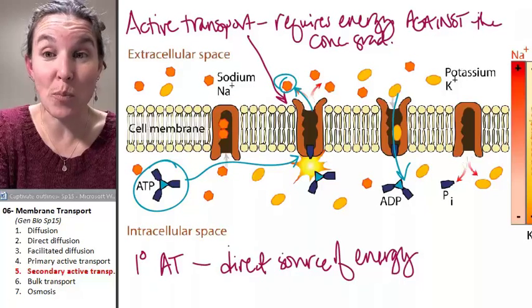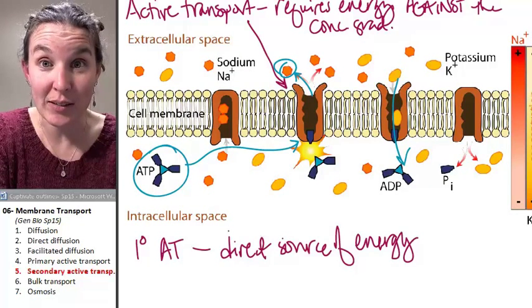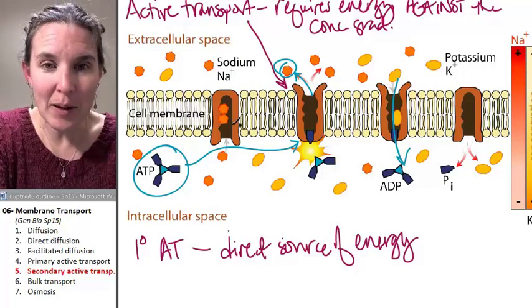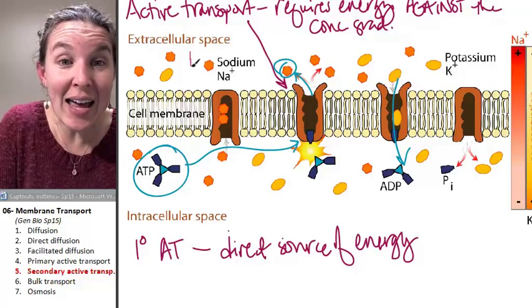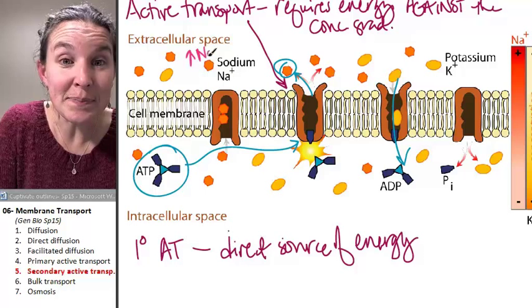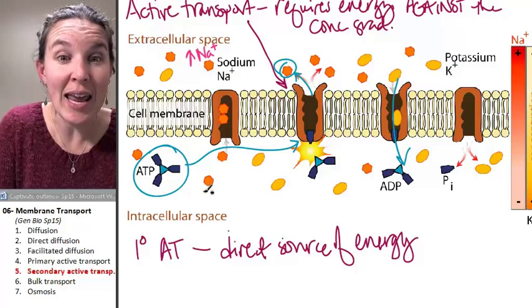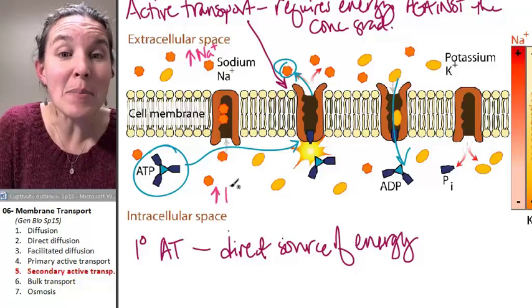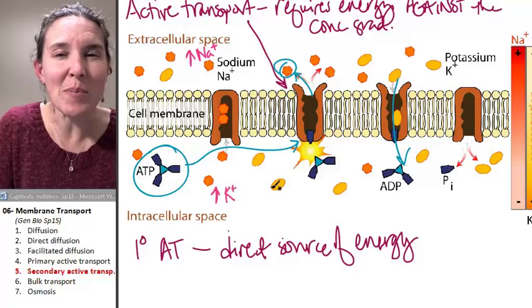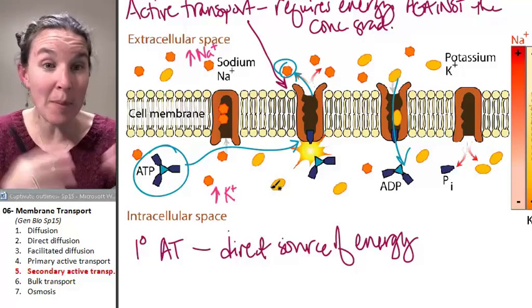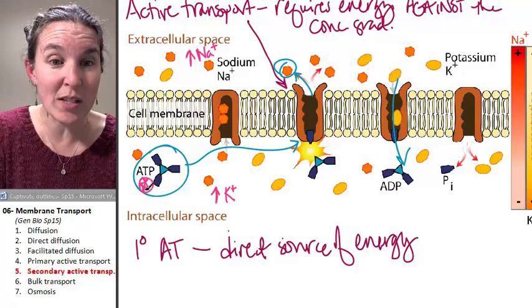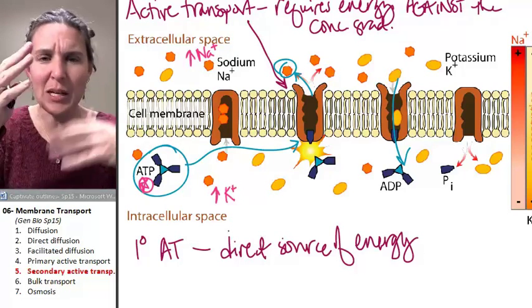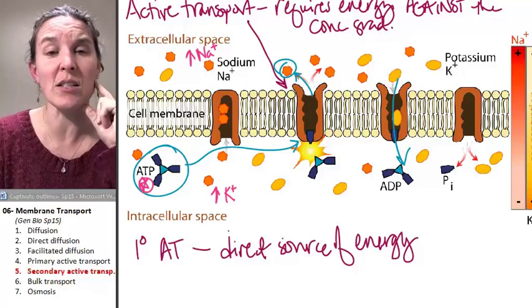Remember, this is primary active transport, and we have a little pump that is basically creating a high sodium environment outside and a high potassium environment inside. So this pump is using a direct source of ATP, and it's pumping and pumping, and it's creating these concentration gradients.